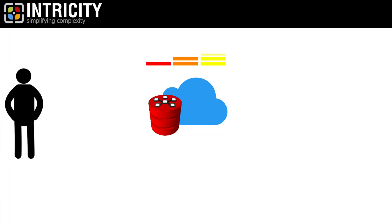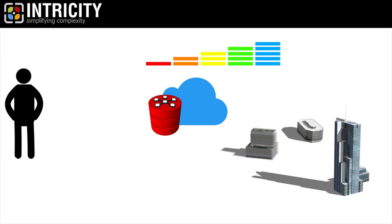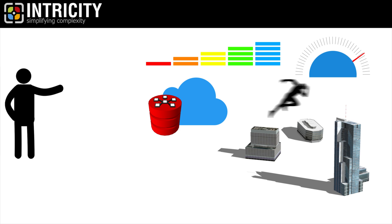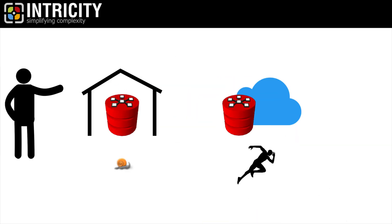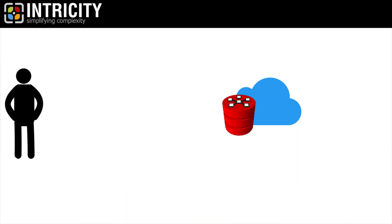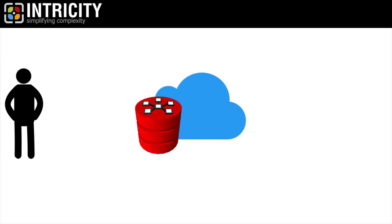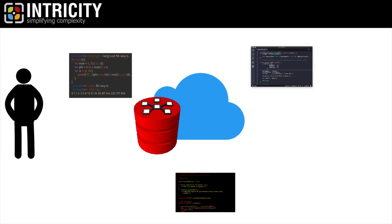Hi, I'm Jared Hillam. The advent of cloud has created a crescendo of activity. This is because the cloud enables organizations to drive massive efficiencies and agility that on-premise solutions can't hold a candle to. However, to take advantage of these new capabilities, the code needs to be native to the target cloud platform.